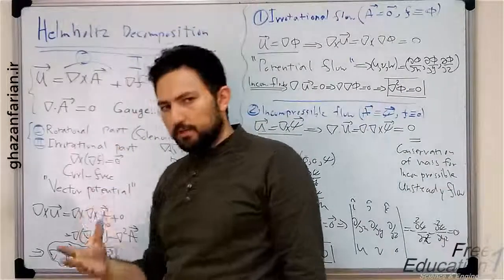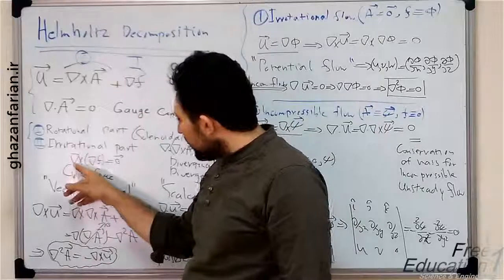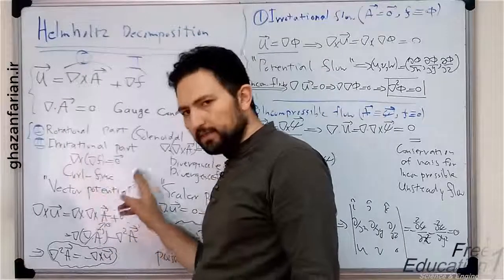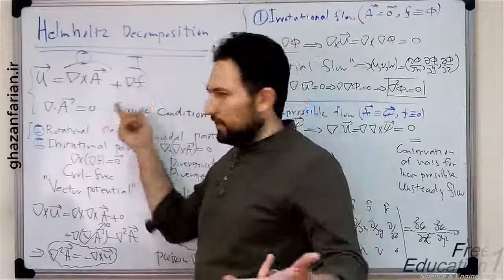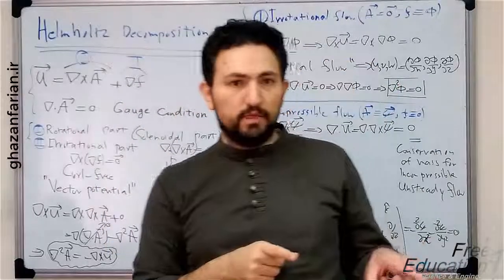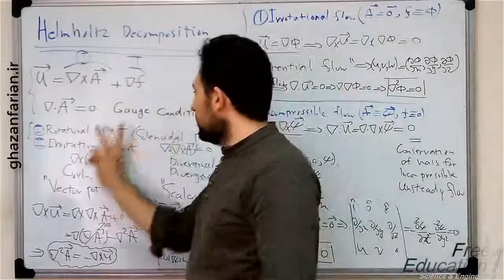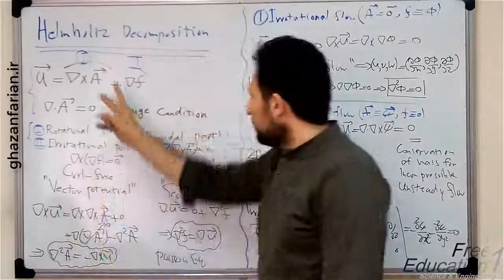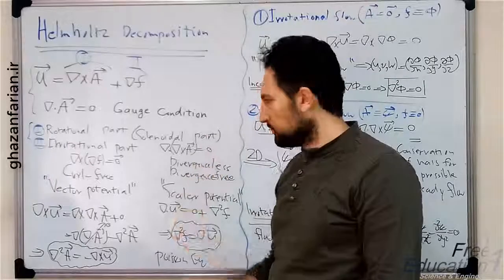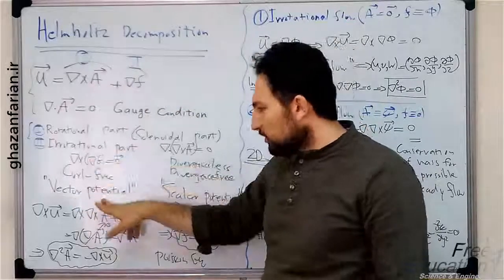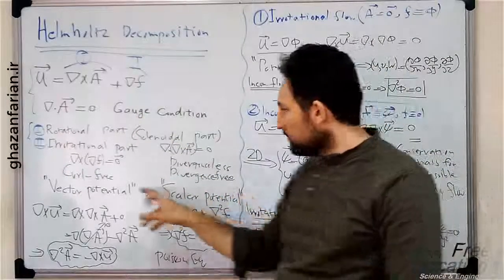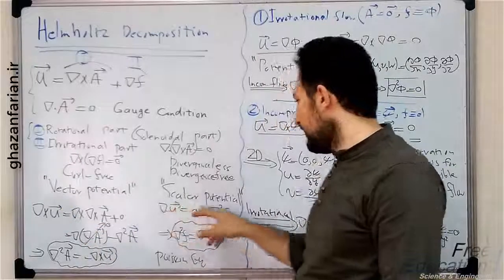The second term uses another well-known identity: the curl of the gradient of any scalar field is zero. The second term is the gradient of something, so its curl is zero. When the curl of something is zero, we say that vector quantity is irrotational. So the second part is the irrotational part, because it is curl-free. The first term is the rotational or solenoidal part. The vector A is called the vector potential, and the scalar field f is the scalar potential, so we have two potential functions.